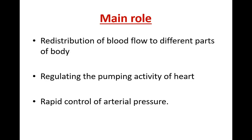Nerves coming from the cranial and sacral parts of the spinal cord are all parasympathetic nerves. Parasympathetic nerves have acetylcholine as their neurotransmitter and sympathetic nerves have epinephrine or norepinephrine. This is the autonomic nervous system through which the neural mechanisms regulate blood flow.